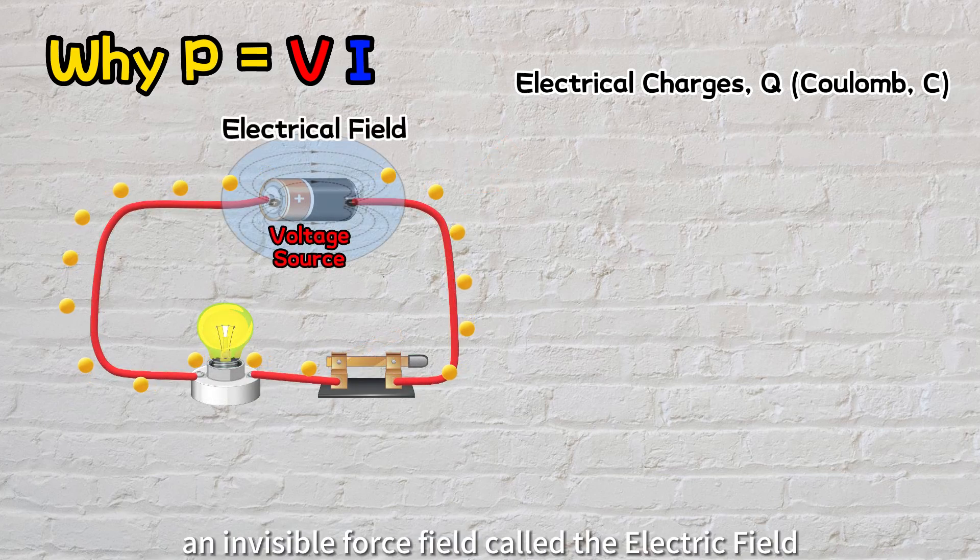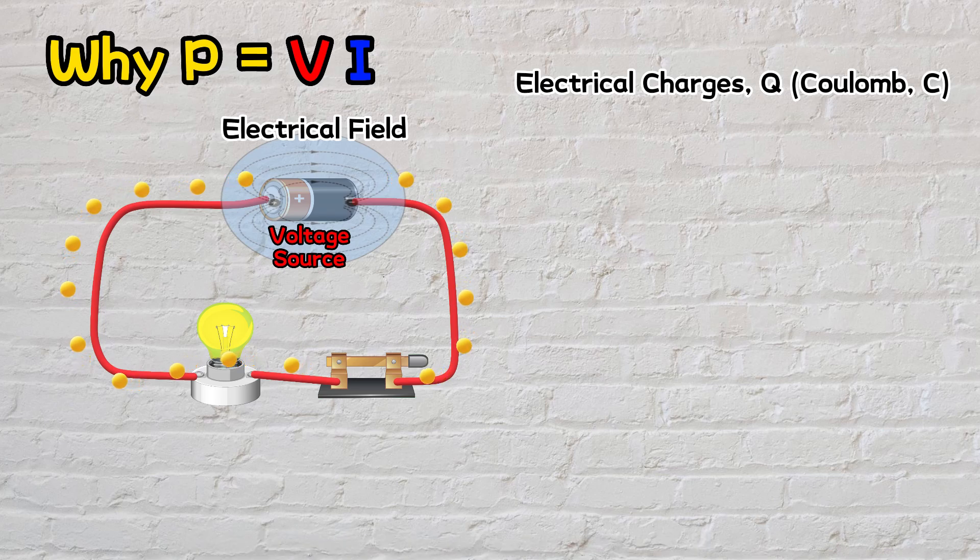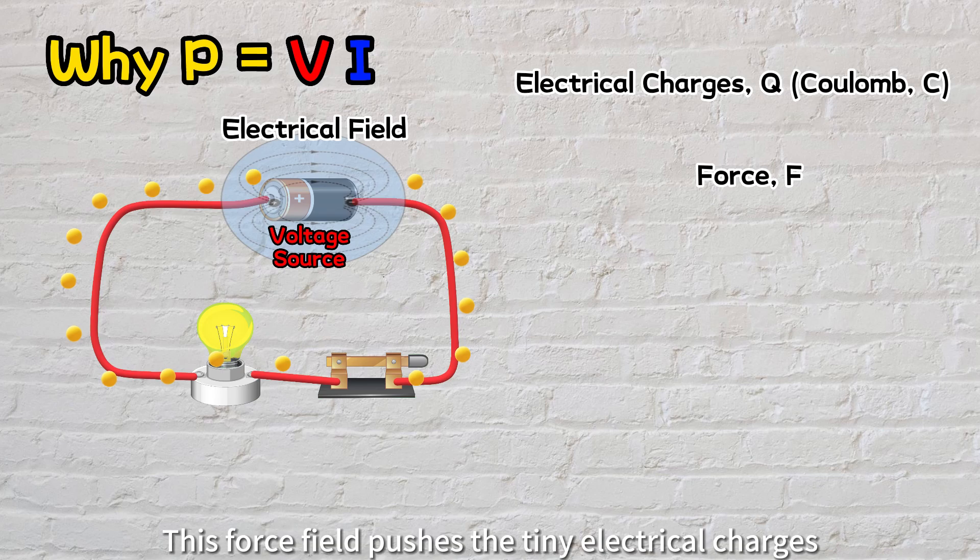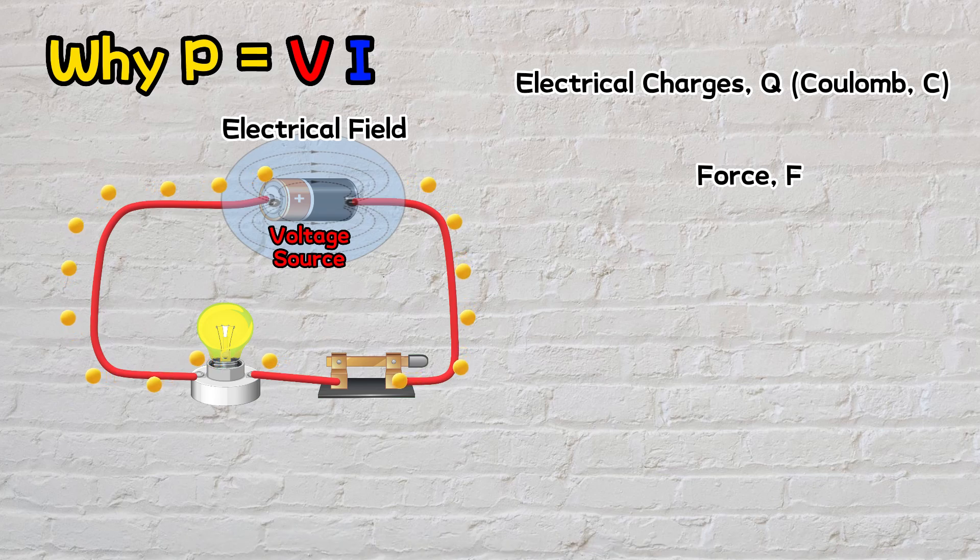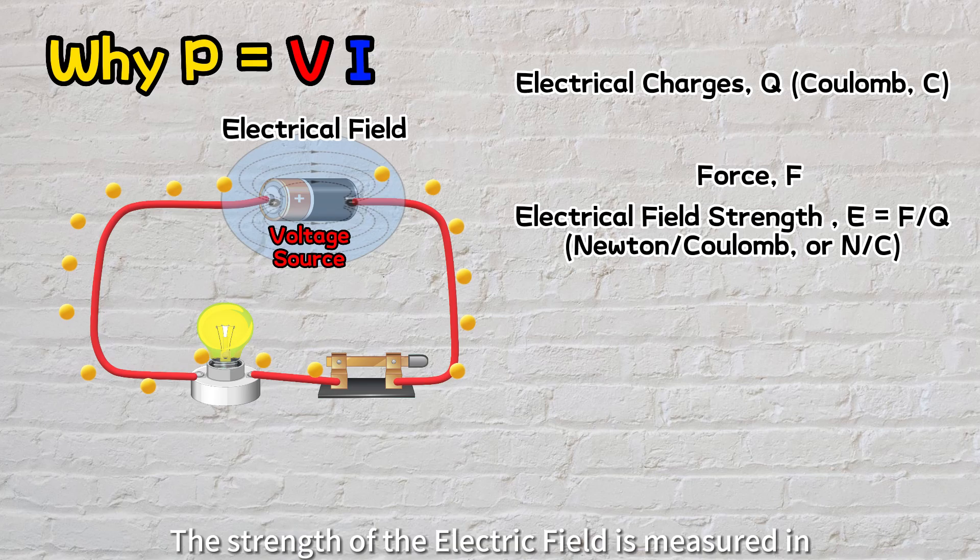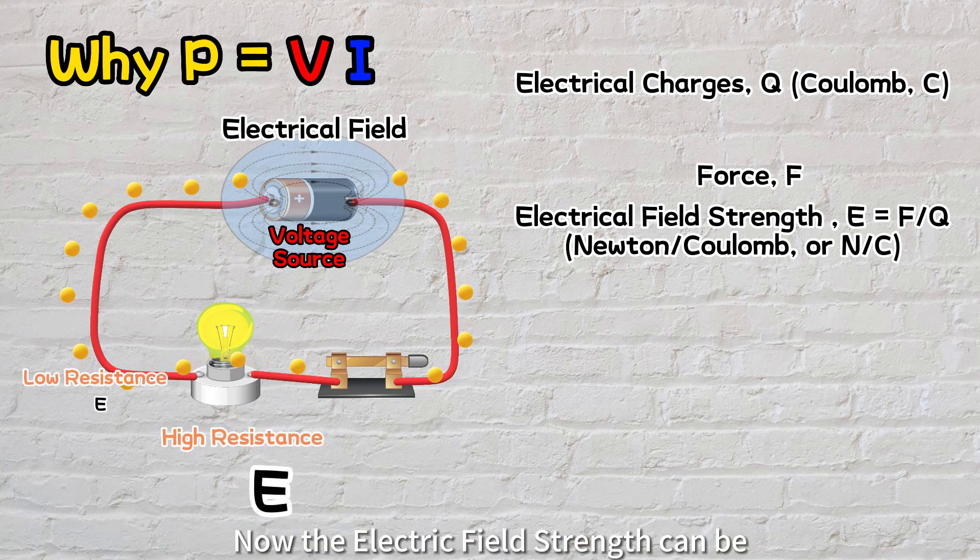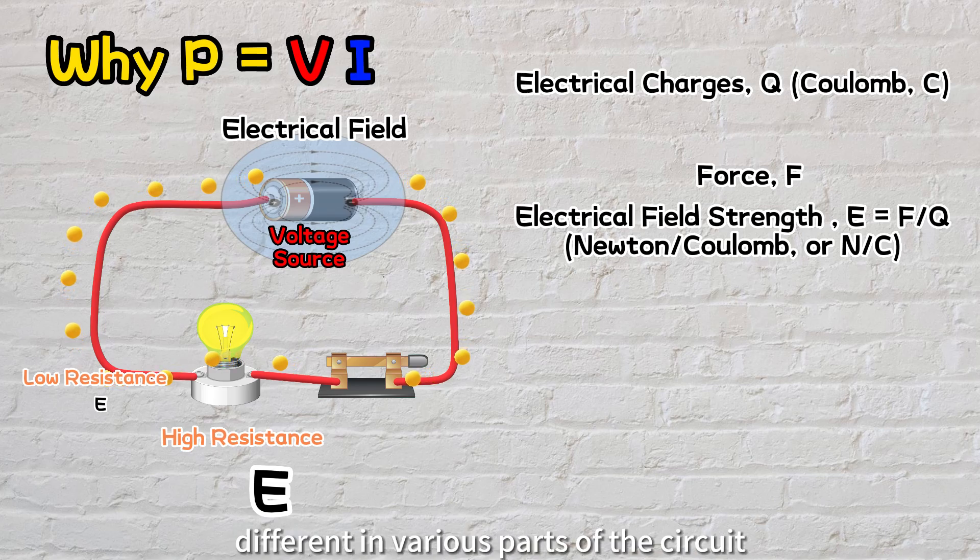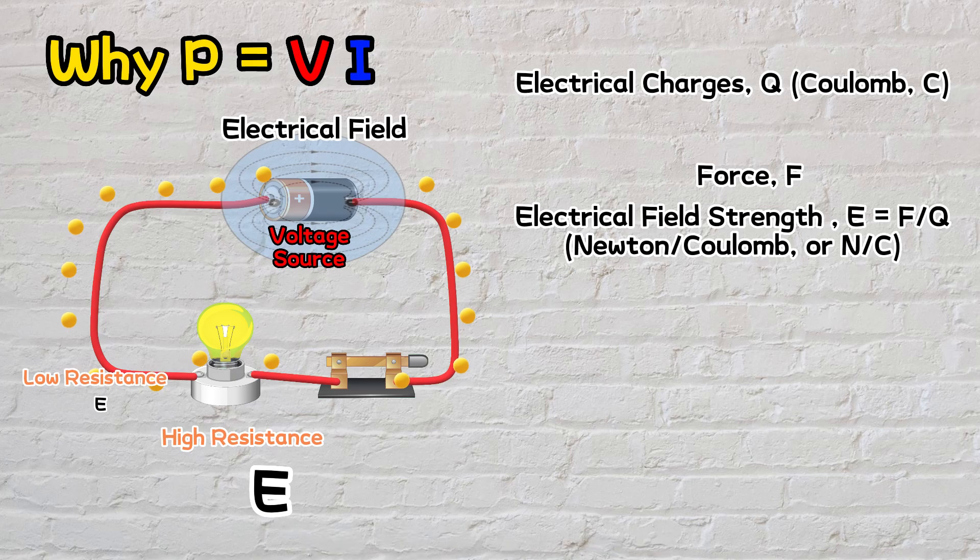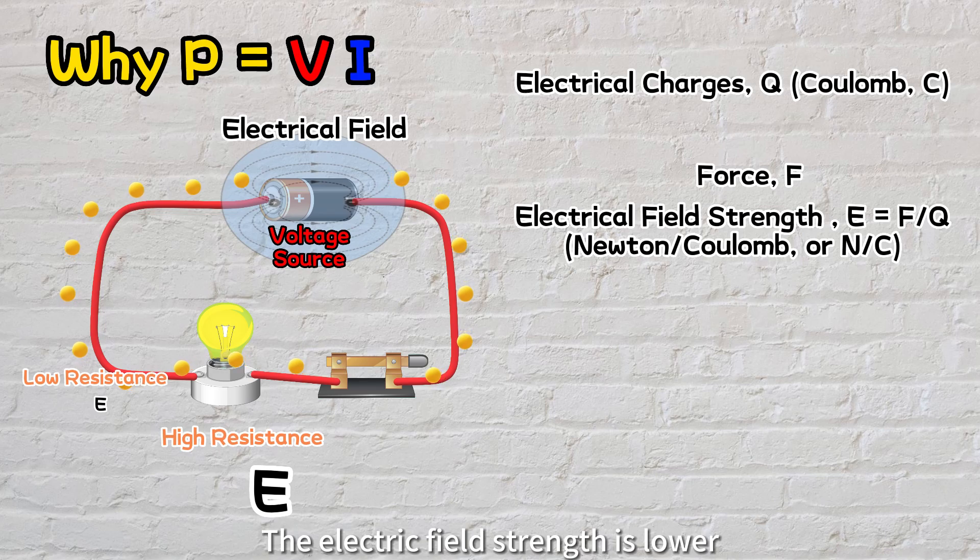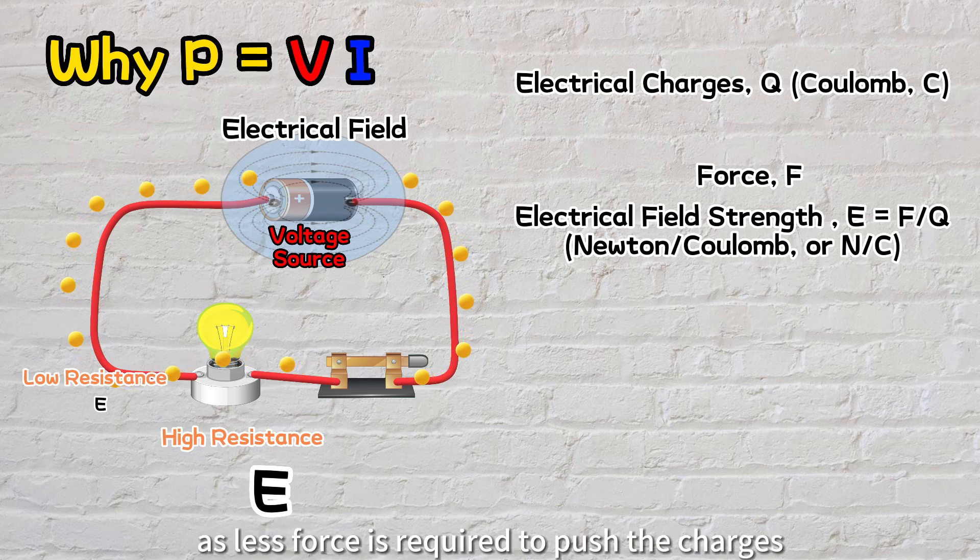When we connect the battery to the circuit, an invisible force field called the electric field spreads throughout the circuit. This force field pushes the tiny electrical charges to move along the circuit. The strength of the electric field is measured in newtons per coulomb. Now the electric field strength can be different in various parts of the circuit depending on the materials. The cable has very low resistance and the charges move more easily; the electric field strength is lower as less force is required to push the charges.